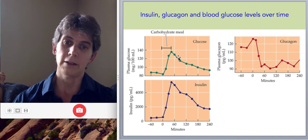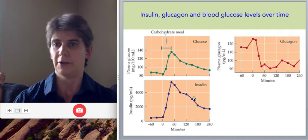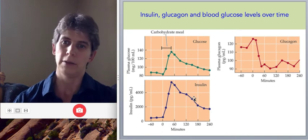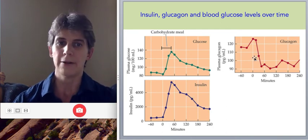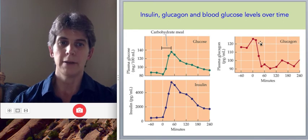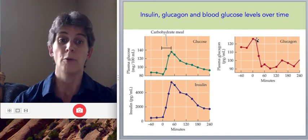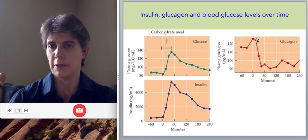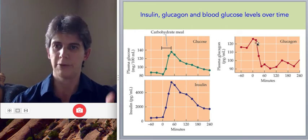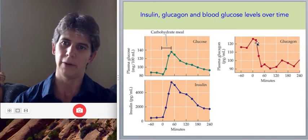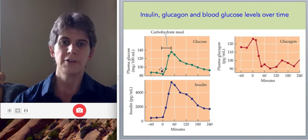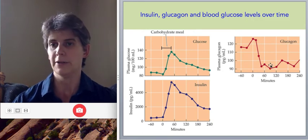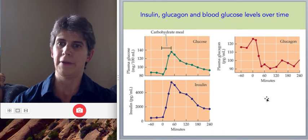And then as the glucose level declines, insulin will also decline because it no longer has that stimulus of high blood glucose. Glucagon has the opposite pattern. It had been high in this particular person before that carbohydrate meal because the person hadn't eaten in a few hours, maybe several hours, and so glucagon was needed to maintain blood glucose levels at a level that wasn't too low. But as soon as that glucose gets into the blood, that suppresses glucagon for several hours actually after that meal.